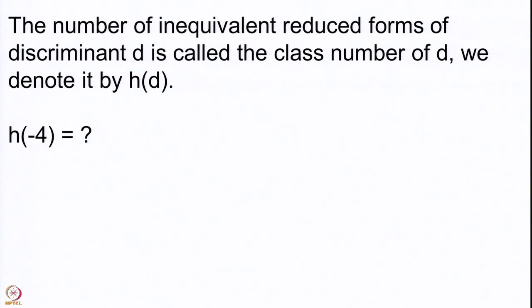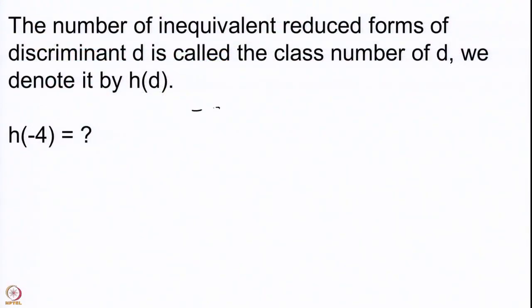Let us do one computation for this number. We know that d has to be negative and is allowed to be 1 or 0 mod 4. Let us look at the first negative number which is non-zero and is 0 mod 4 — that number is minus 4. Let us compute h(−4). We have the bound that −d ≥ 3ac, but −d here is 4.